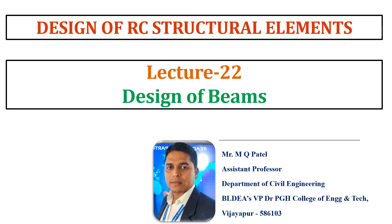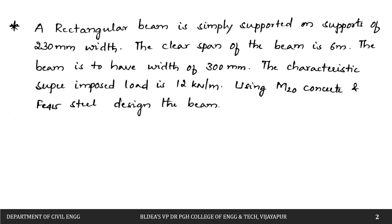In this video we are going to study the design of beams. In the previous video we covered the basics and general procedure to design a beam. So let us solve one numerical problem now. We have a rectangular beam simply supported on supports of 230 mm width. The clear span of the beam is 6 meters. The beam width is 300 mm and the characteristic superimposed load is 12 kN per meter. We have to use M20 grade of concrete and Fe415 steel.